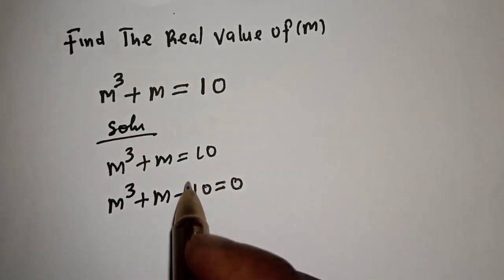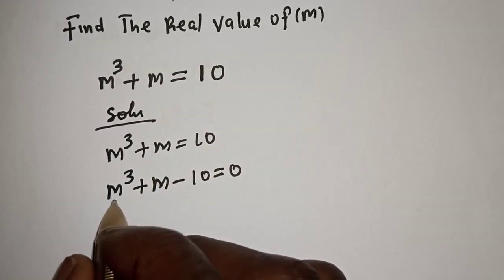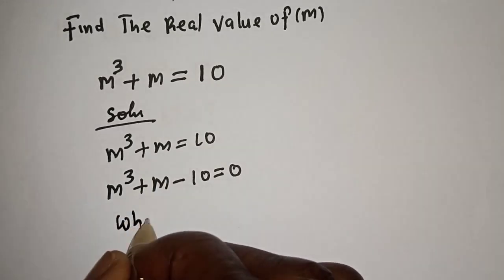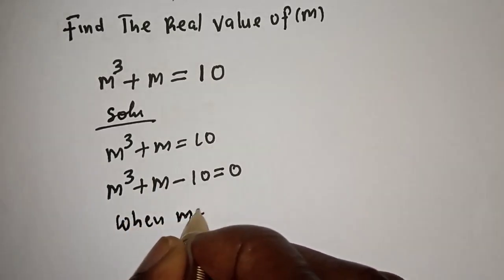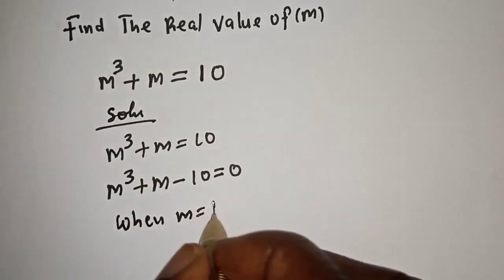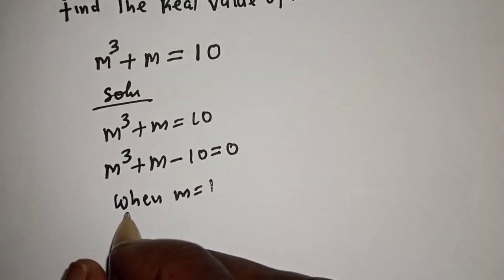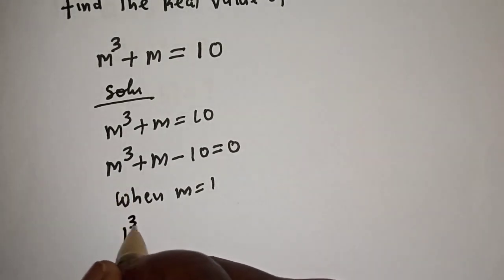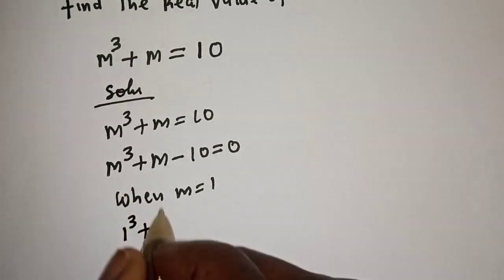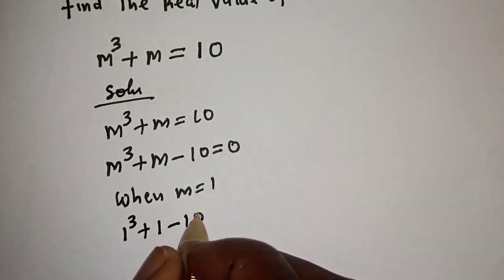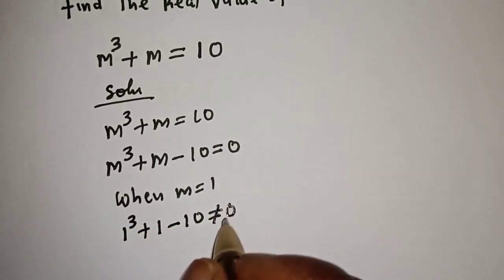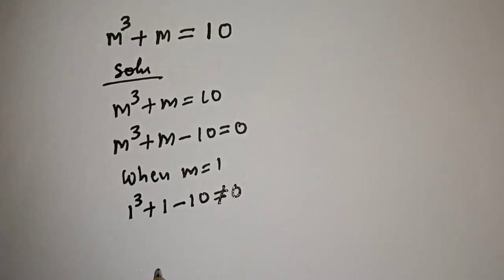First, let's check the factors. When m is equal to 1, m cubed plus m minus 10 gives 1 cubed plus 1 minus 10, which is not equal to 0.